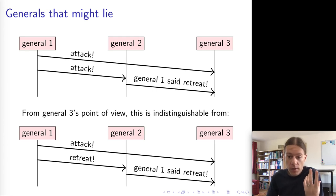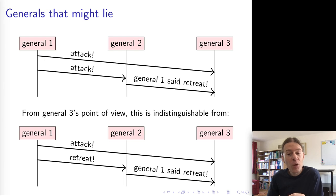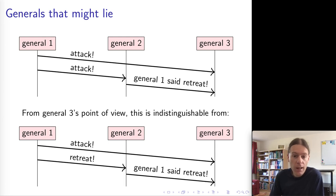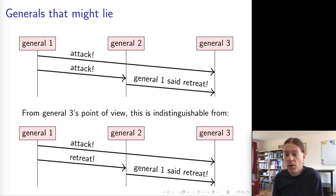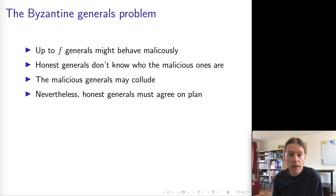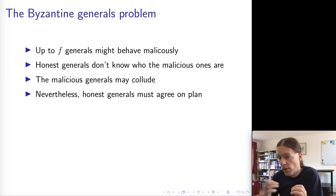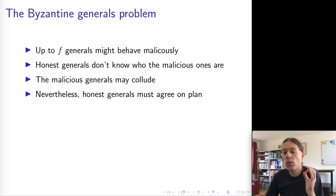This is the core of the problem: from the point of view of general three, it's impossible to tell the difference between these two scenarios, and so it's impossible for general three to determine whether general one is being malicious or whether general two is. Given this scenario where nodes might lie, the Byzantine generals problem is that we want all of the honest generals to come to an agreement.